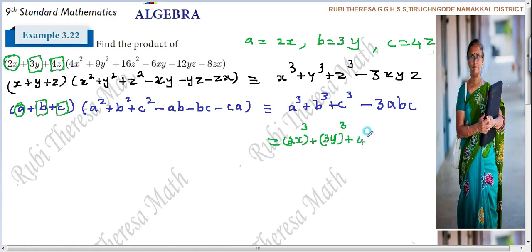Plus c³. What is c? 4z. So, (4z)³ minus 3 into a. In the place of a, you will write 2x. In the place of b, you will write 3y. In the place of c, 4z. 3abc - minus 3abc here.